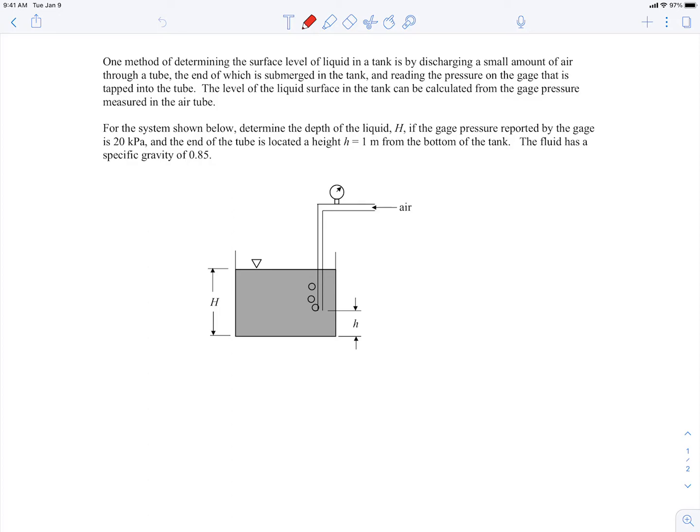Okay, in this example we're told that we have a device for measuring the surface level of liquid in a tank. It's done by discharging some air into the tank, just a small amount of air, so it's basically stagnant air in here. It's not really moving very much, goes through the tube, and we're gonna measure the gauge pressure here of the air.